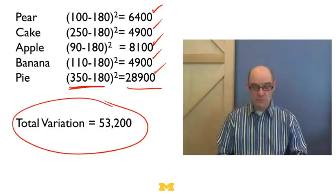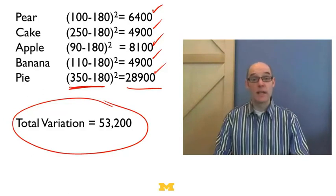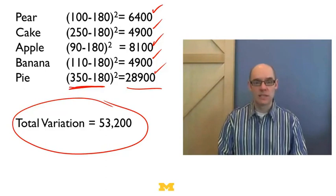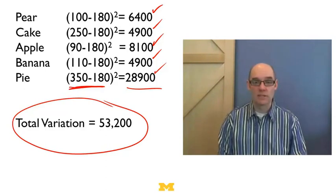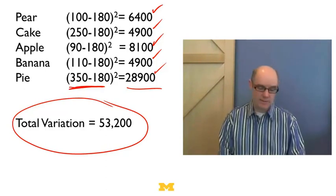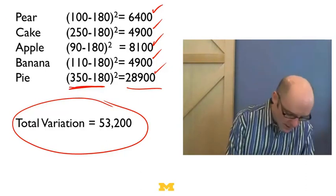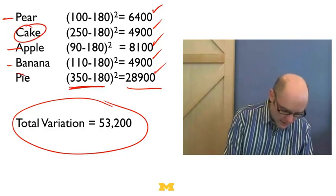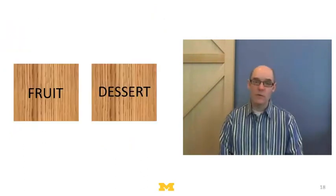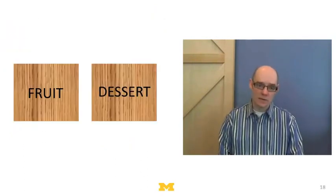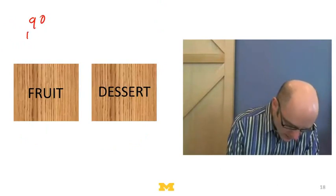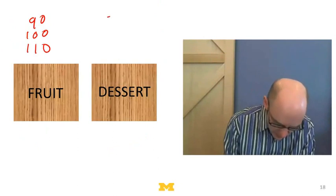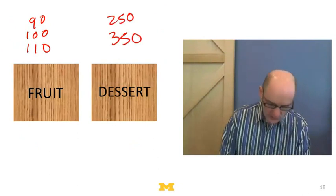So I plotted that data. This tells me sort of how much variation is there in that data. And what I'd like to do, let's keep track of the plot here. I'd like to put the data in categories that reduces that variation. It somehow explains why some things are high and some things are low. So what's the obvious categorization? The obvious categorization here is that pears and apples and bananas are fruit and cakes and pies are desserts. So let's create a fruit category and a dessert category. So in the fruit, I've got one thing that's 90, one thing that's 100, and one thing that's 110. And in the dessert category, I've got one thing that's 250 and one thing that's 350.